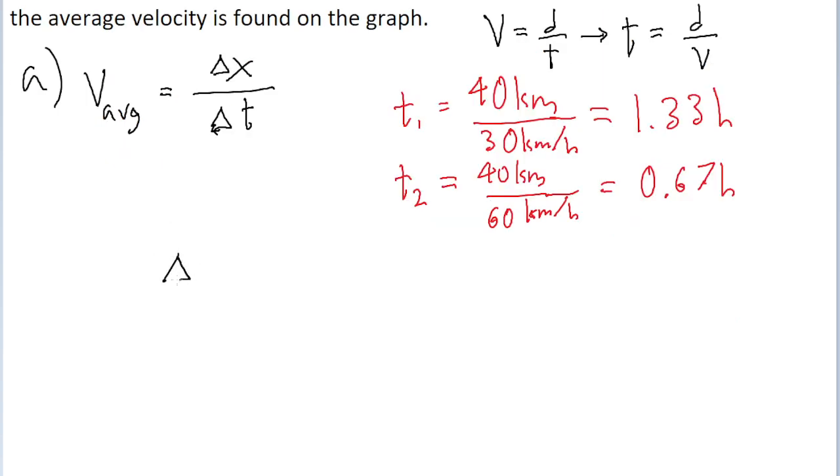The total time interval for the trip is going to be the sum of these two smaller parts. So delta t equals t sub 1 plus t sub 2: 1.33 hours plus 0.67 hours for a total time of 2 hours.